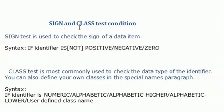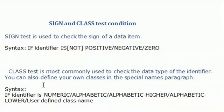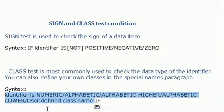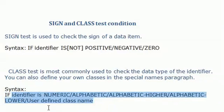Sign and class test conditions: the sign test is used to check the sign of a data item — whether it is positive or negative. The class test is used to check the data type of the identifier. You can also define your own class in the special names paragraph.